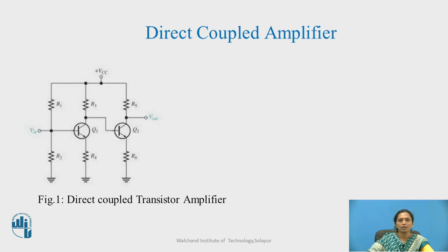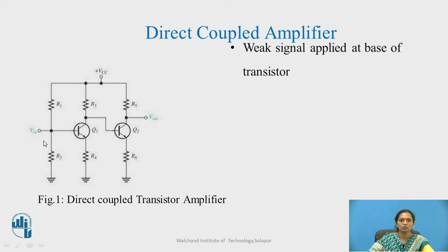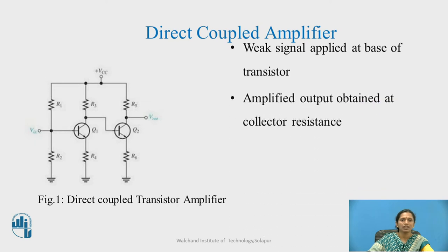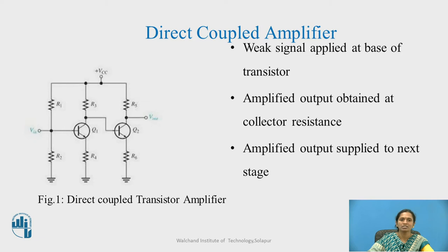This is the circuit diagram for the direct coupled transistor amplifier. Voltage divider biasing is used. No coupling capacitor, bypass capacitor, or input capacitor is used. A weak signal is applied at the base of the transistor, which is amplified and obtained at the collector resistance, and that same signal is given to the input of the next stage.